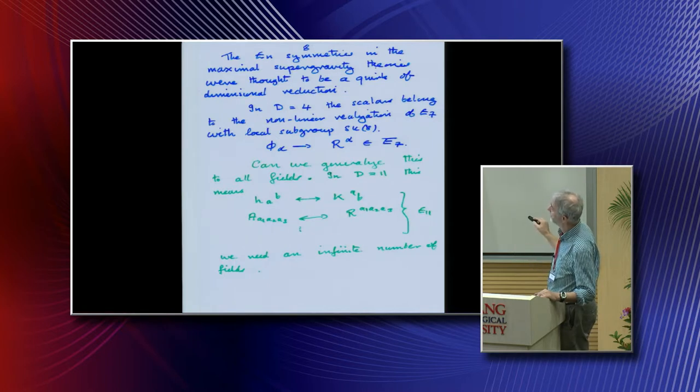The way I did it: in four dimensions we have 70 scalars, and the local subgroup is SU8. For each of these scalars we have a generator in the non-linear realization. Then you could say, what about the gauge fields and the vectors? Let's give them generators. Then you'd find some bigger algebra.